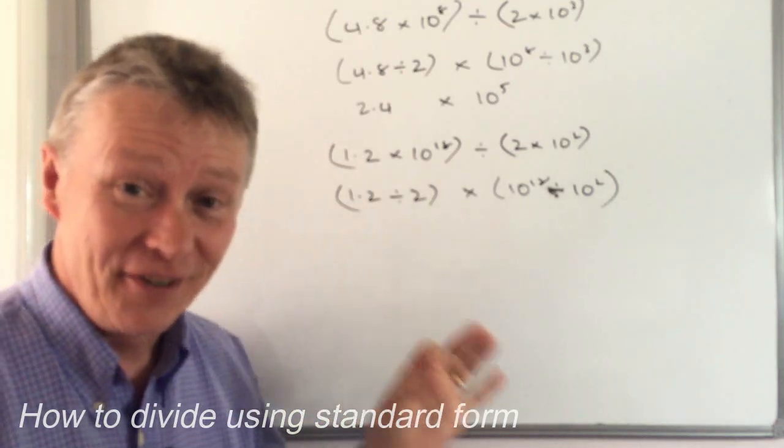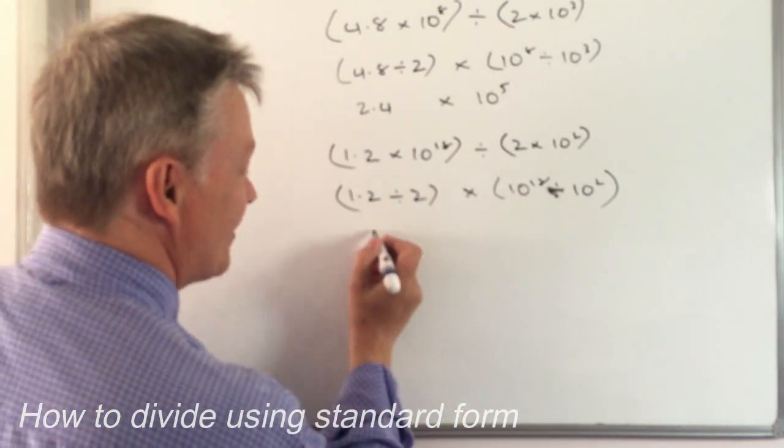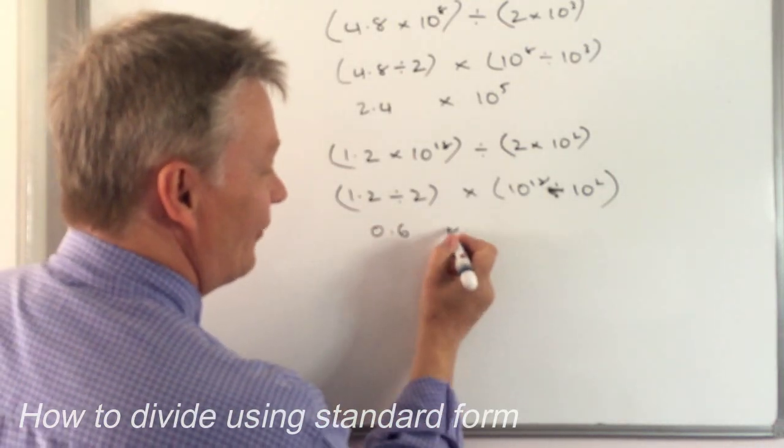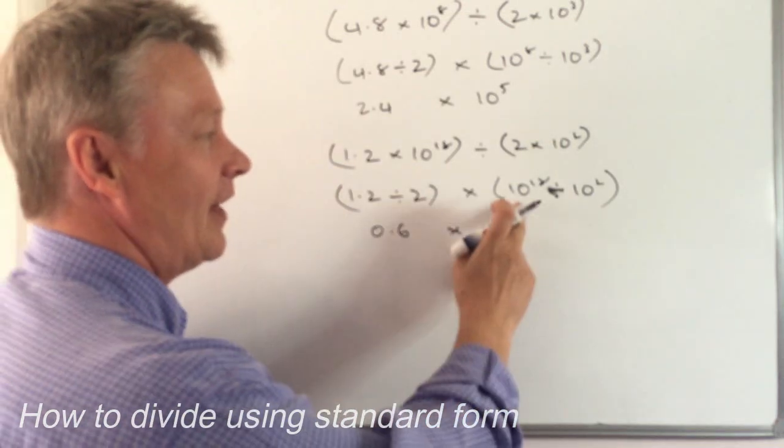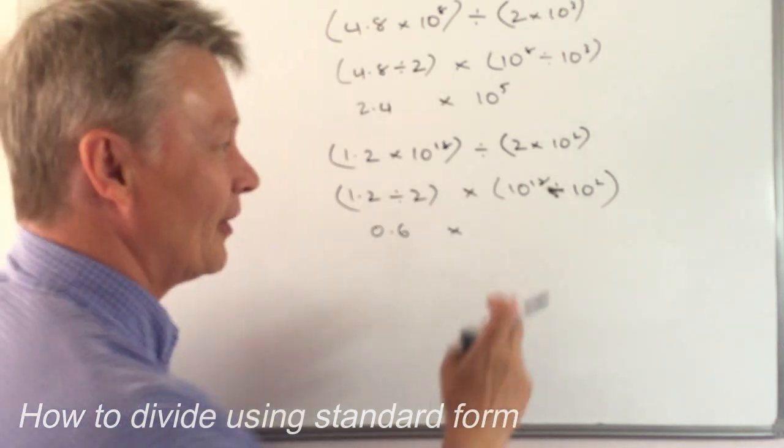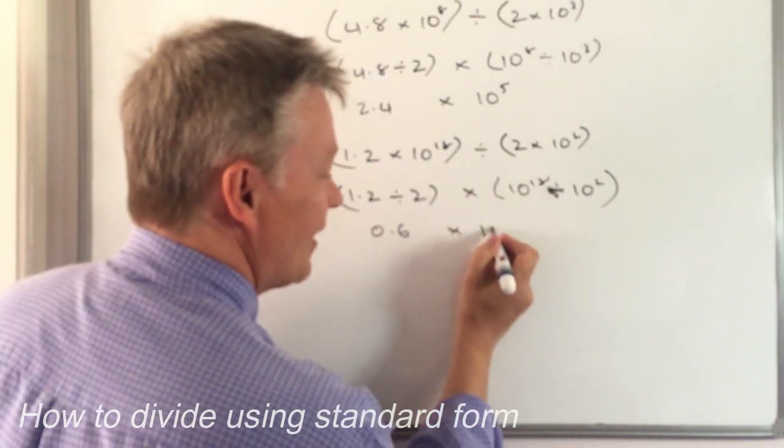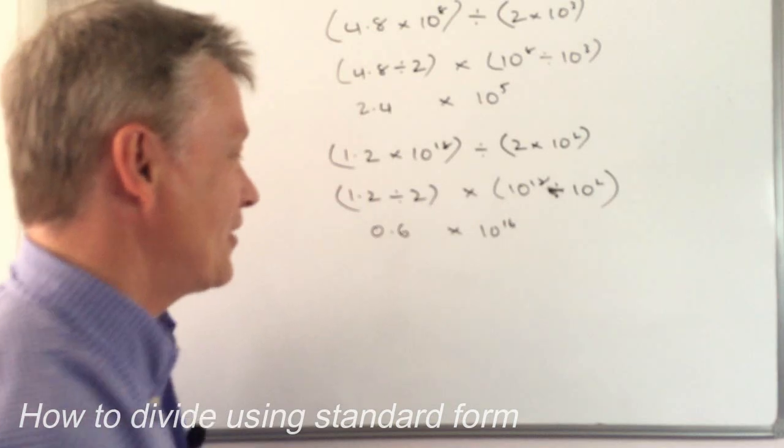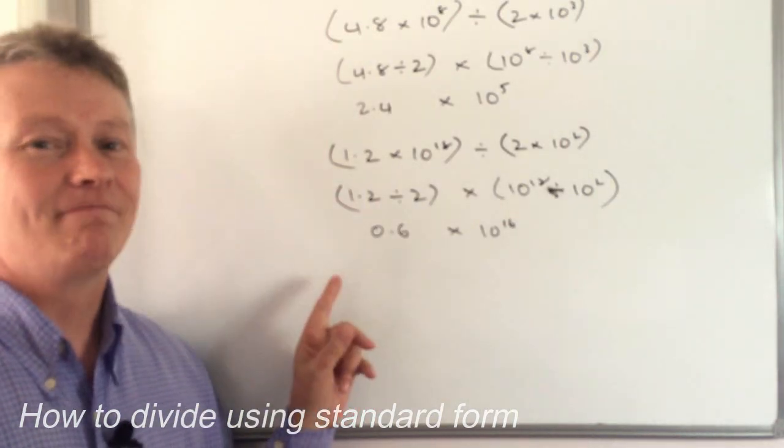All right. So 1.2 divided by 2 is 0.6 and then the standard form part of it is 10 to the power of 18 divided by 10 to the power of 2. Well, I'm going to subtract my indices, 10 to the power of 16. Is that good enough? No.